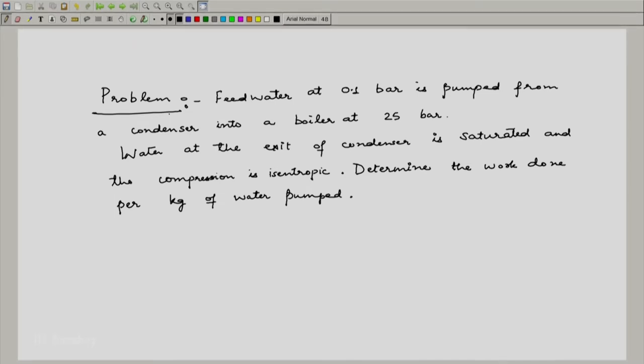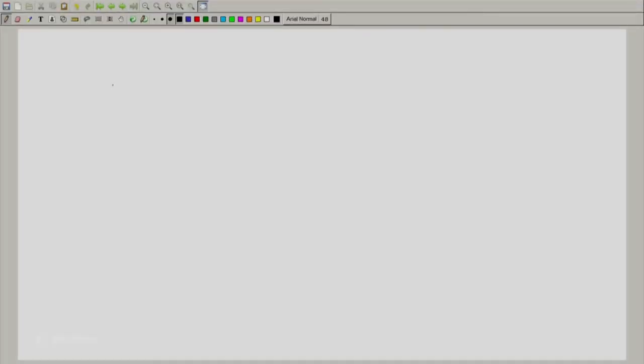So let us see how to approach this. As far as the first law for open system goes, this is reasonably straightforward to write down the equation. Still, let me write down the equation here. We had Q̇ - Ẇₛ = ṁ[(hₑ - hᵢ) + (vₑ² - vᵢ²)/2 + g(zₑ - zᵢ)].